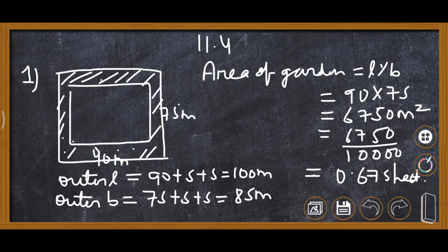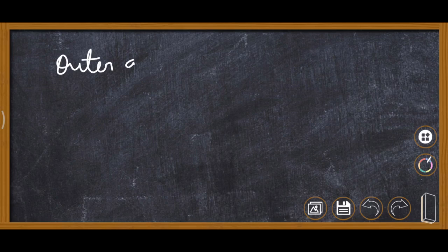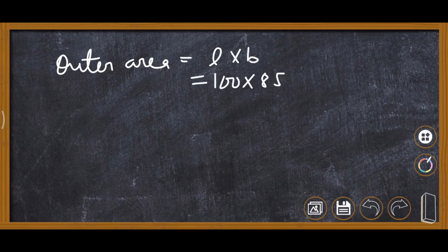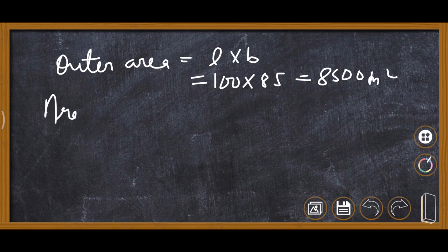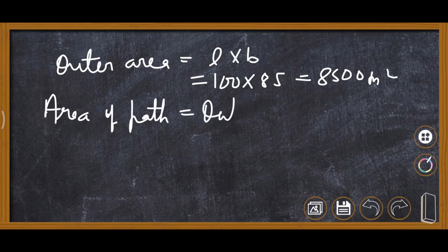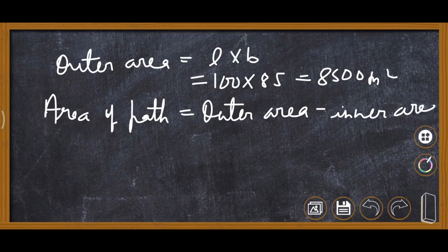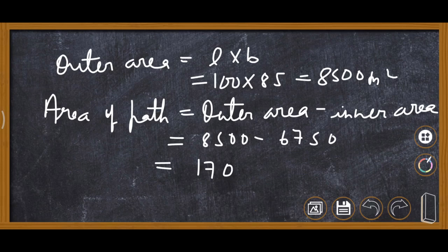Now by the outer length and breadth we will find the outer area. Outer area equals length times breadth, so 100 times 85 equals 8500 meter square. Area of path equals outer area minus inner area: 8500 minus 6750 equals 1750 meter square.